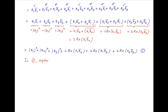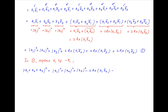In result 1, replace z1 with minus z1. We therefore get the square of the absolute value of minus z1 plus z2 plus z3 equals the square of the absolute value of z1 plus the square of the absolute value of z2 plus the square of the absolute value of z3, minus two times the real part of z1 times the conjugate of z2, minus two times the real part of z1 times the conjugate of z3, plus two times the real part of z2 times the conjugate of z3. Let's call this result 2.